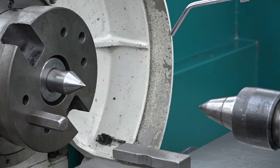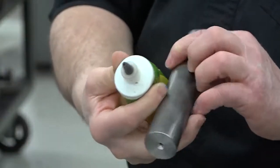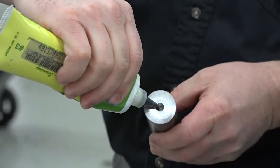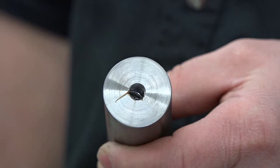Now, we need to offset the tailstock. High pressure lubrication is needed in both ends of the part because the contact area between the center holes and the centers is very limited. This happens when the tailstock is offset.